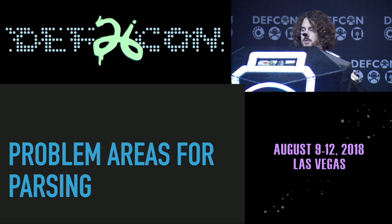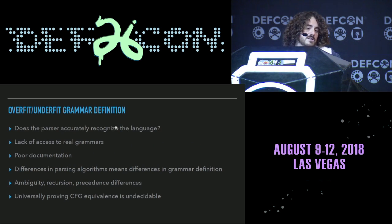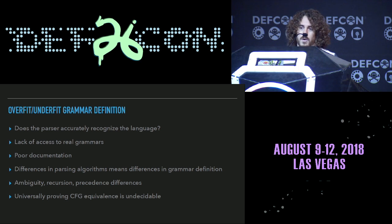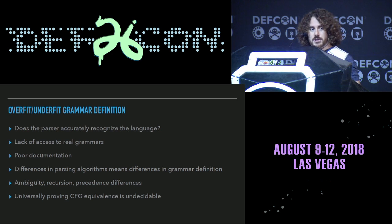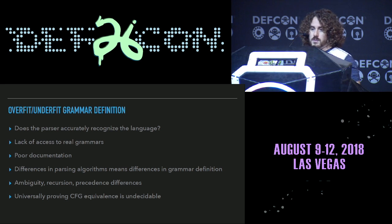There are a few different problem areas in parsing when you're trying to verify whether your parser is correct. The first is overfit and underfit implementations. The goal of a parser is to recognize a language. If I have the reference implementation and it accepts something that mine doesn't, I'm now underfit — I do not recognize the same language that the reference implementation does. And if it doesn't recognize something that I do, then I'm overfit.